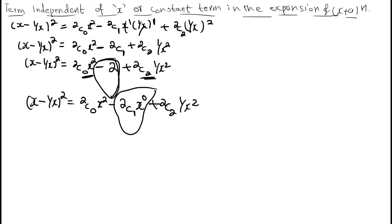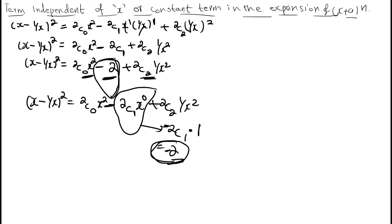The meaning of 'term independent of x' is a constant term — a term where the power of x equals zero. In this expansion, ²C₁ · x⁰ = 2 is the constant term. We call this the term independent of x, meaning a term without x. Term without x means power of x equals zero. Another name for term independent of x is constant term.